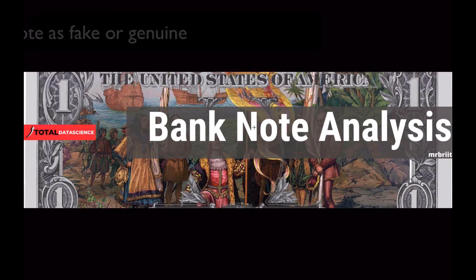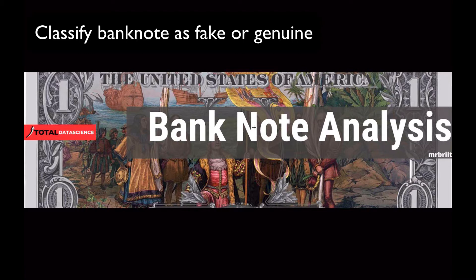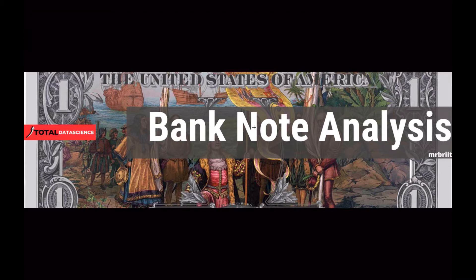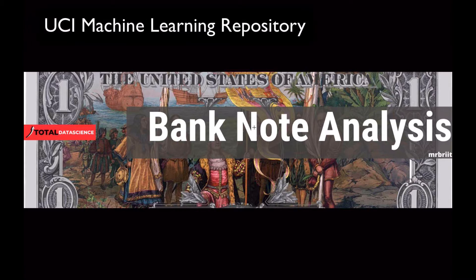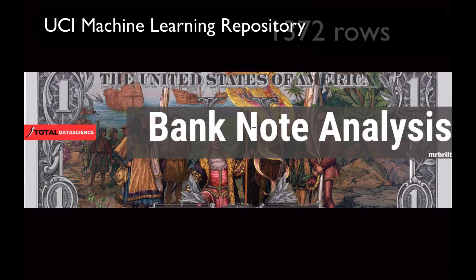In this project, we will classify a banknote as fake or genuine, based on the given dataset from the UCI machine learning repository, which consists of about 1372 rows with five different columns.